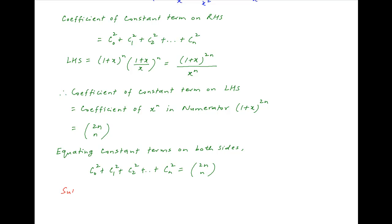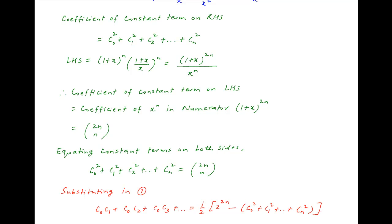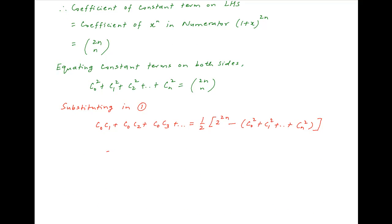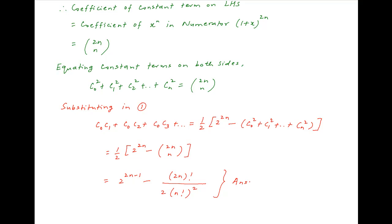Using this result in Result 1, the sum of the products of the coefficients taken two at a time equals half of [2^(2n) − (C0² + C1² + ... + Cn²)] = half of [2^(2n) − C(2n,n)]. This can be written as 2^(2n−1) minus half of (2n)! / (n!)², which is the required answer.